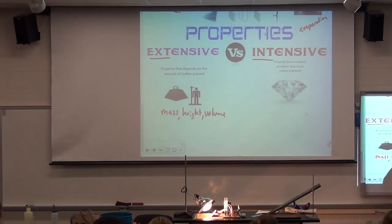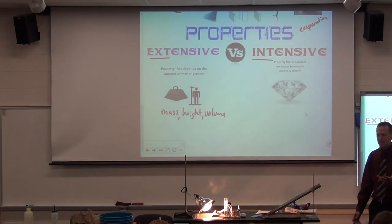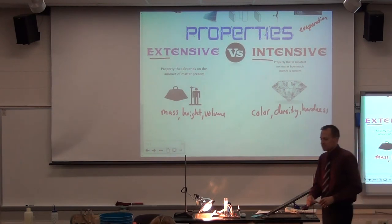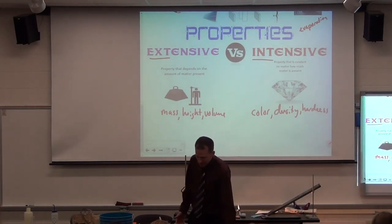But what's an intensive property? Well, I picked a really good example in general as a diamond. A diamond has a lot of things that we could talk about with it. One, the color would always be the color. The density is always going to be the same. The hardness. Things that will never change.